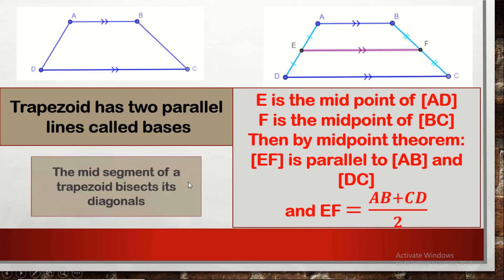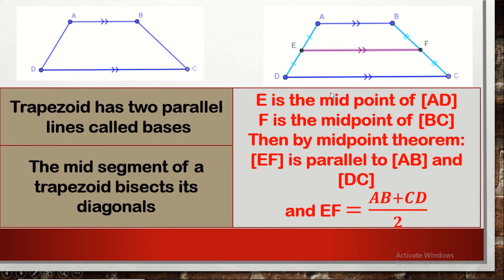Also, the midsegment in a trapezoid bisects the two diagonals BD and AC — it cuts them at their midpoints.